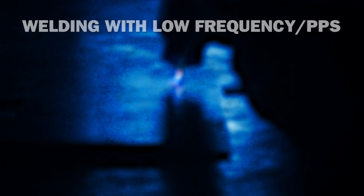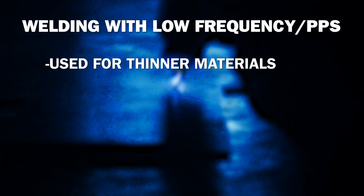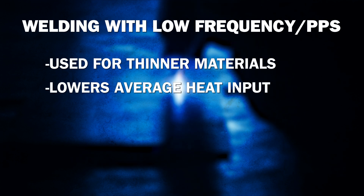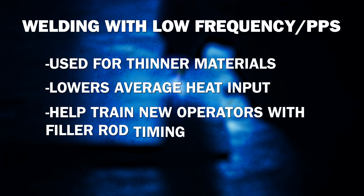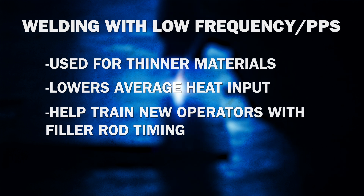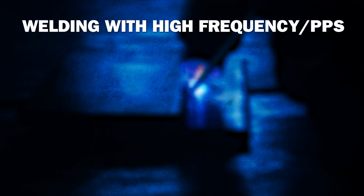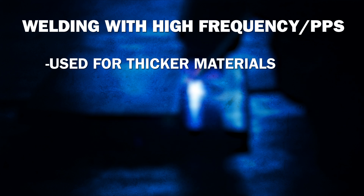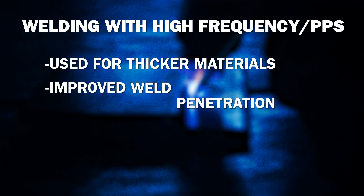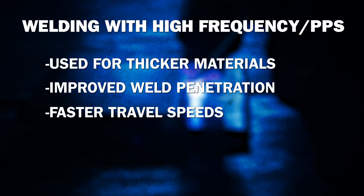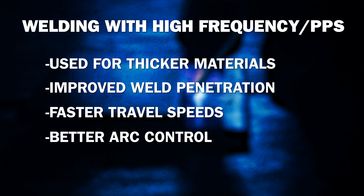Welding with a lower frequency, or PPS, is typically used to weld thinner materials. Having a lower frequency lowers the average heat input in the weld and can help train new operators with learning filler rod timing. Welding with a higher frequency, or PPS, is typically used when welding thicker material. Higher frequencies can allow for improved weld penetration, faster travel speeds, and better control over the arc.